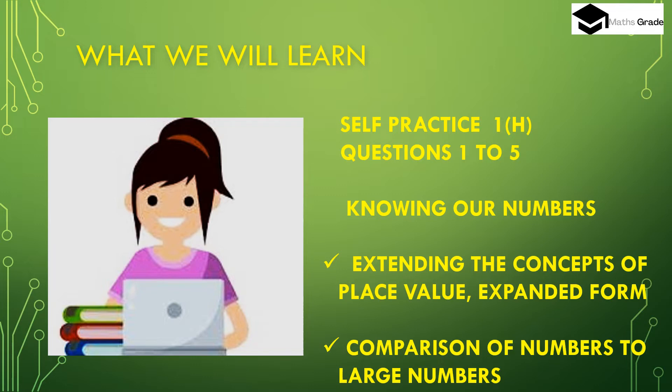Today we will learn and solve Self Practice exercise questions 1H, questions 1 to 5 of chapter 1. The chapter name is 'Knowing Our Numbers' and the topics are: extending the concepts of place value, expanded form, and comparison of large numbers. Let's solve some questions.